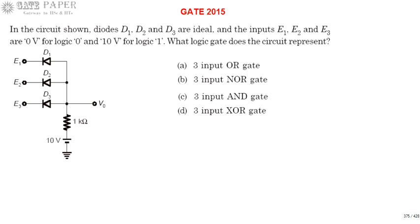Hello, we are discussing about GATE 2015 ECE paper. Look at the circuit diagram. The circuit consists of three diodes D1, D2, D3. They are ideal in nature and the inputs E1, E2, and E3. The input values may be either 0 volts for logic 0 and 10 volts for logic 1. What is the logic gate expression this circuit represents? What is the function generated by this logic gate circuit? That we are going to check.